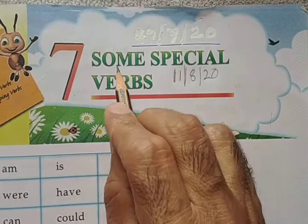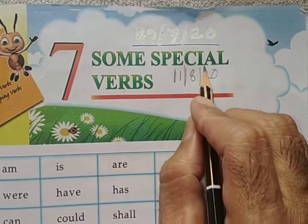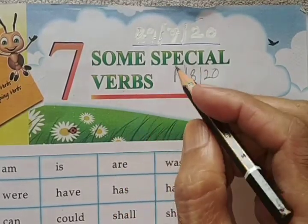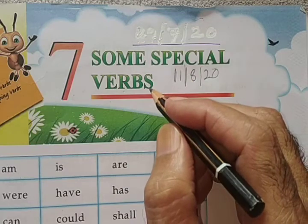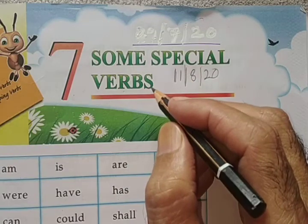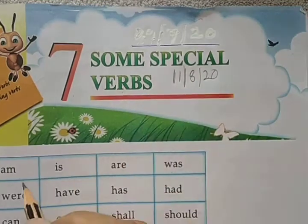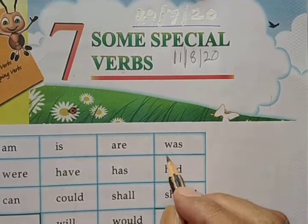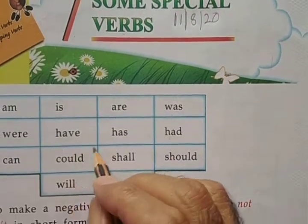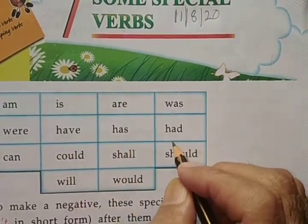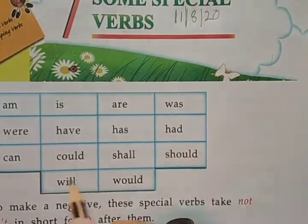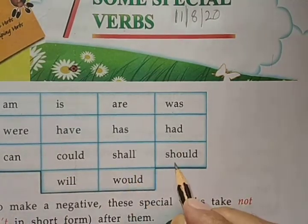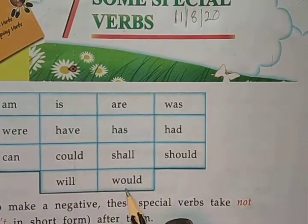Some Special Verbs are: am, is, are, was, were, have, has, had, can, could, shall, should, will, would.